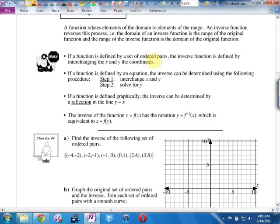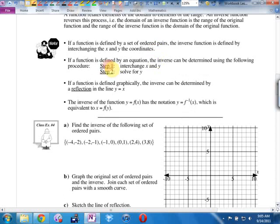If a function is defined by a set of ordered pairs, you switch X and Y around. We're going to use that strategy quite often on a graph. If my graph goes through 5, 2, the inverse goes through 2, 5. So, if it's an equation, interchange. I just use the word switch.